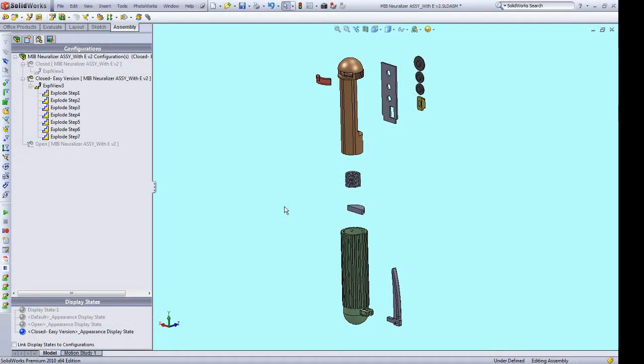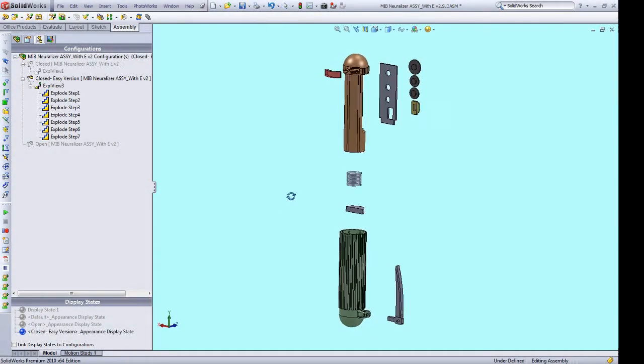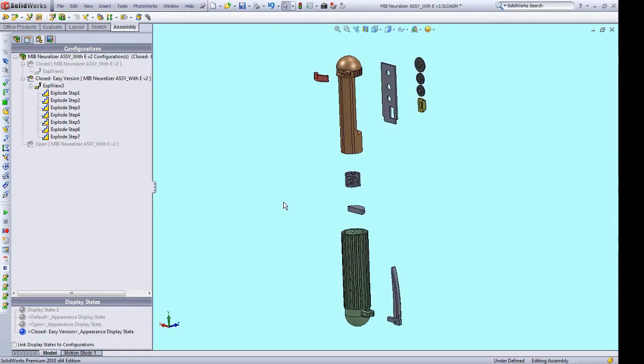So here we have the CAD for the simple Neuralyzer shown in an exploded view. You can see some of the main parts are the top piece which slides in and out of the bottom shell.